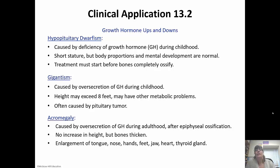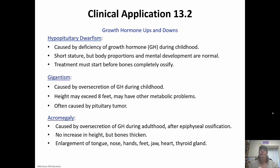Gigantism is caused by over-secretion of growth hormone during childhood — height can exceed eight feet — and they'll also have other metabolic problems, often caused by a pituitary tumor. Acromegaly is caused by over-secretion of growth hormone during adulthood, after epiphyseal ossification has occurred. Since the epiphyseal plate in the long bones has closed, there's no increase in height, but the bones start to thicken and other organs and parts of the body start to enlarge.